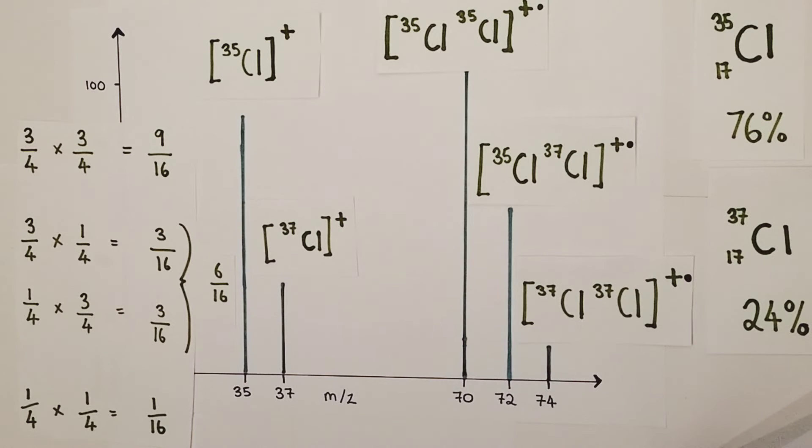And finally to have a chlorine-37 isotope bonded to a chlorine-37 molecule, that's a one in four chance, about 25%, multiplied by one in four chance again, about 25%, so one times one is one, four times four is sixteen - there's a 1/16 chance of you getting a molecule with Cl-37 bonded to Cl-37. So think about that in terms of magnitude - that's a 9 to 6 to 1 ratio of Cl-35-35 molecules, Cl-35-37 molecules being present.